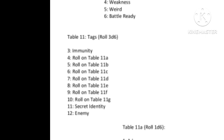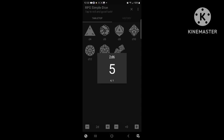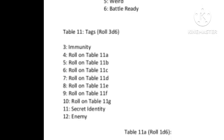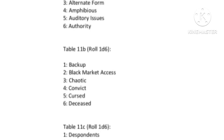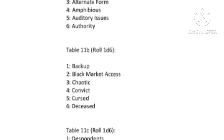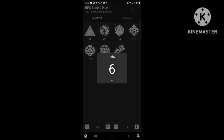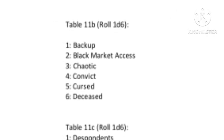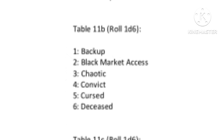We'll roll for another tag. We get a 5, which leads us to another chart — 11B. Some really interesting ones here. We roll and get a 6, which is deceased. So this elemental is dead — an elemental lawyer who's dead and blind, or some kind of blindness.